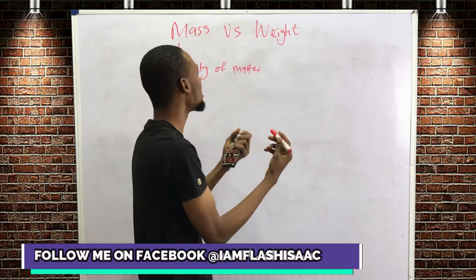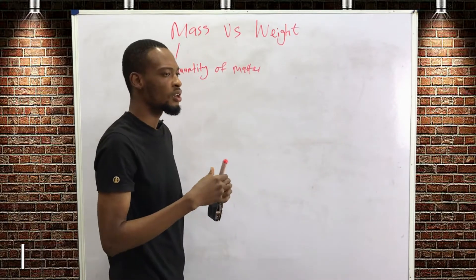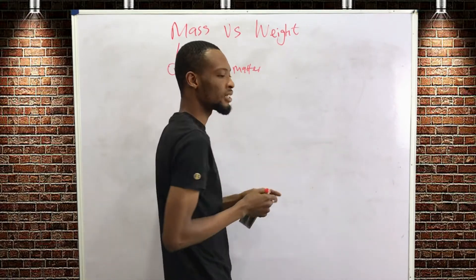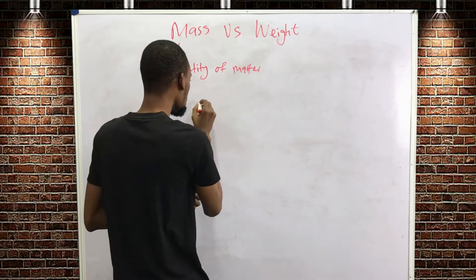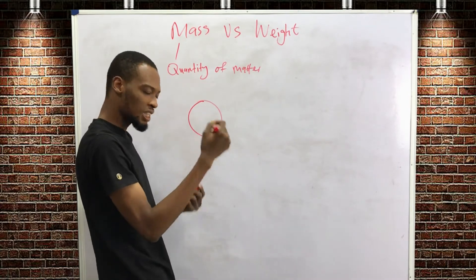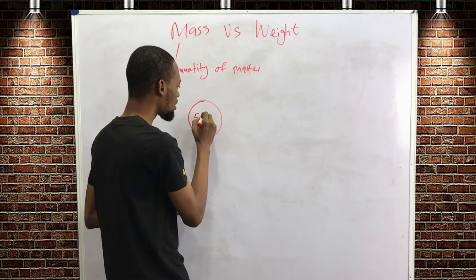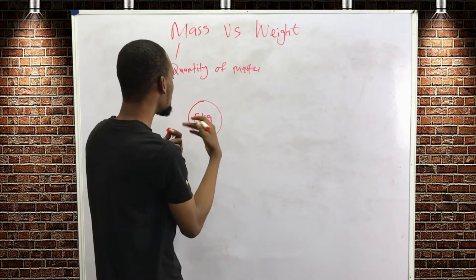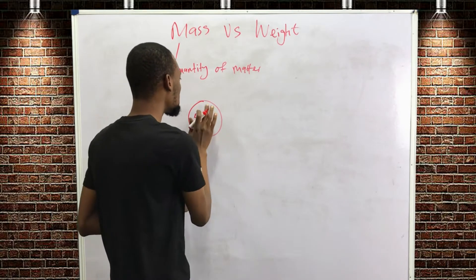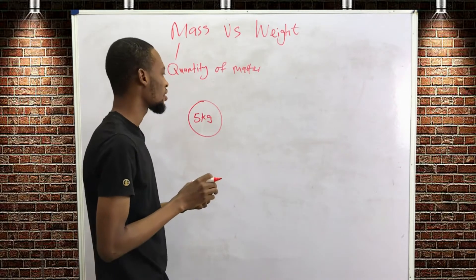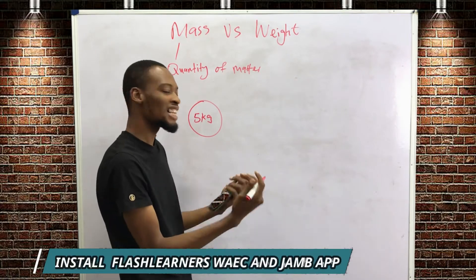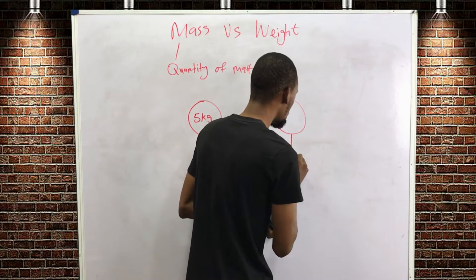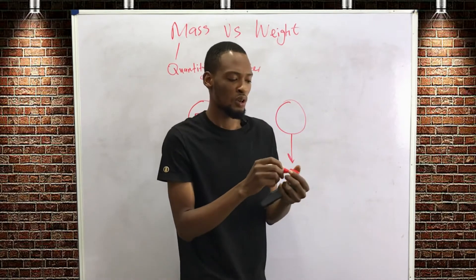Whereas weight is the Earth's pull on a body. Let's say this is a ball and we give it a mass of 5 kg — so 5 kg is the quantity of matter in this body. But weight is the Earth's pull on that body.